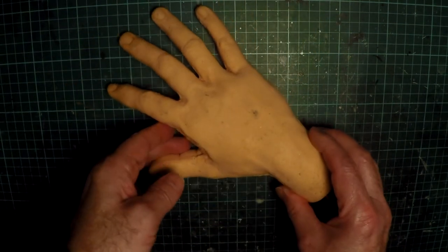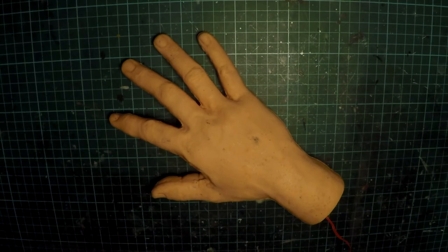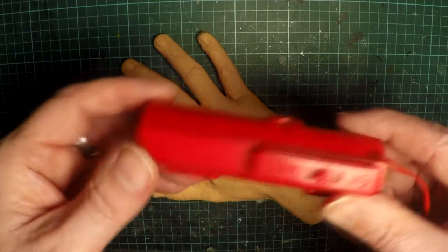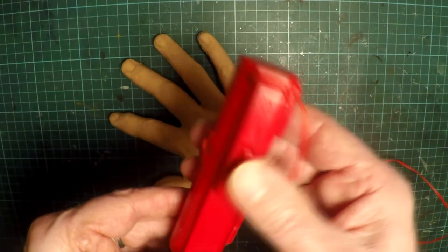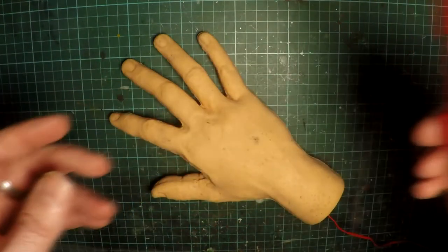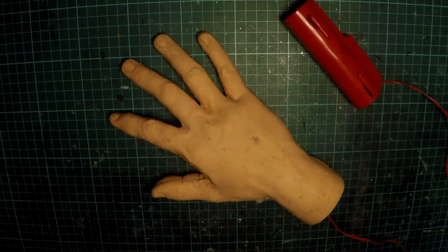It does have these nasty seam lines from when it was made. There's not really too much I can do about that, given my limitations, but I'll have a go anyway. It comes with a battery pack, holds two C-cell batteries, and this is what powers the mechanism.